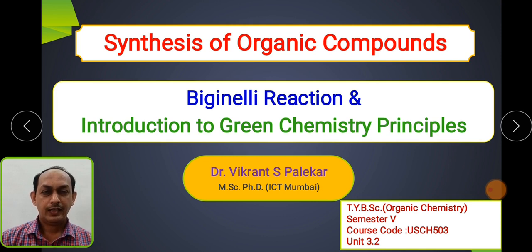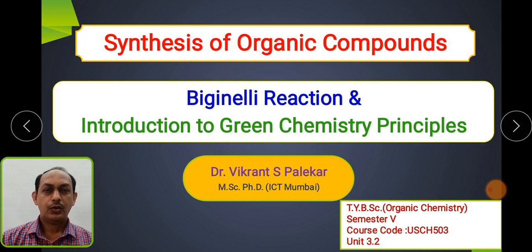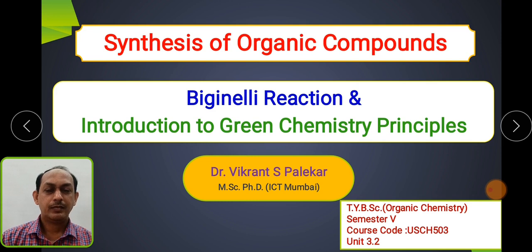This is the third session. In the earlier session, we tried to understand what is ideal organic synthesis and what are the different types — linear synthesis and convergent synthesis. In the last session, we saw multi-component reactions, where more than two components react in one single vessel to form a product. Such reactions are advantageous from the point of view of overall yield and atom economy.